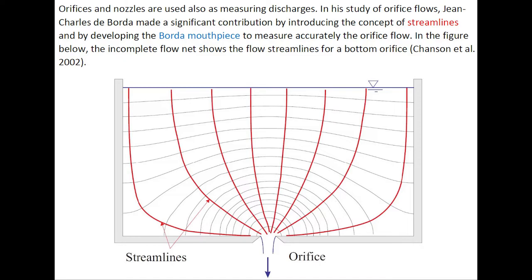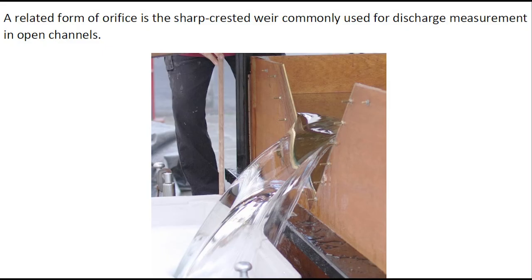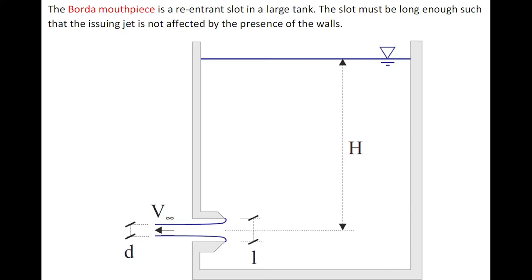In the figure below, an incomplete flow net shows the streamlines for a bottom orifice. A related form of orifice is a sharp-crested weir, commonly used for discharge measurement in open channels.